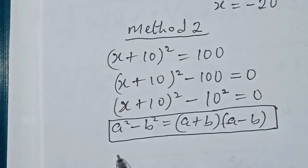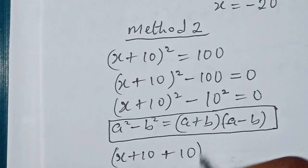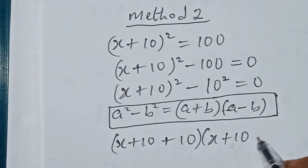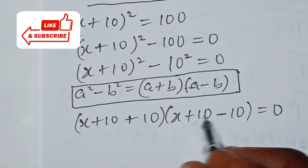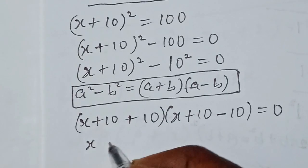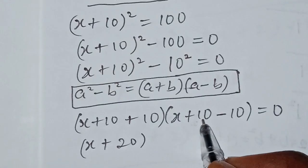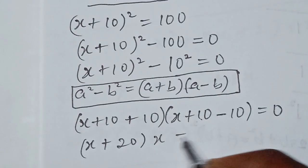Using the difference of squares identity, (x + 10) becomes 'a' and 10 becomes 'b'. So the expression becomes (x + 10 + 10)(x + 10 − 10) = 0, which simplifies to (x + 20)(x) = 0.